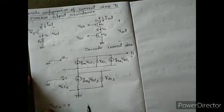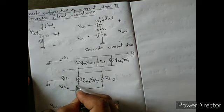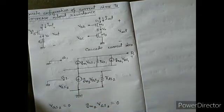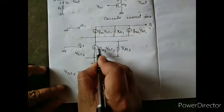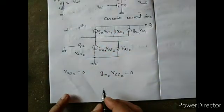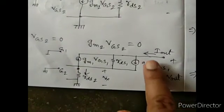Since VGS2 equals zero, the gm2·Vgs2 dependent current source term becomes zero, so that branch will be open as no current passes through it. If we simplify the drawing, instead of that branch we just get RDS2. The gm2·Vgs2 source is open.